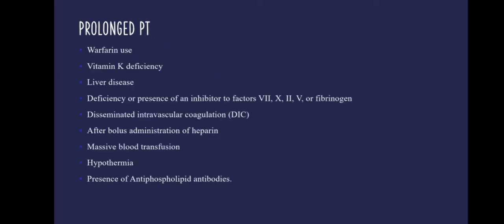The causes of prolonged Prothrombin Time are: warfarin use; vitamin K deficiency; liver disease due to the diminished synthesis of clotting factors; deficiency of factors 7, 10, 2 (prothrombin), 5, or fibrinogen; presence of inhibitors to the above said factors; disseminated intravascular coagulation; bolus administration of heparin; massive blood transfusion due to dilution of plasma clotting factors; hypothermia, as it causes inhibition of a series of enzymatic reactions of the coagulation cascade; and the presence of anti-phospholipid antibodies, which can cause increased conversion of prothrombin to thrombin in vivo, leading to an overall decrease in prothrombin, which can result in an increased Prothrombin Time.